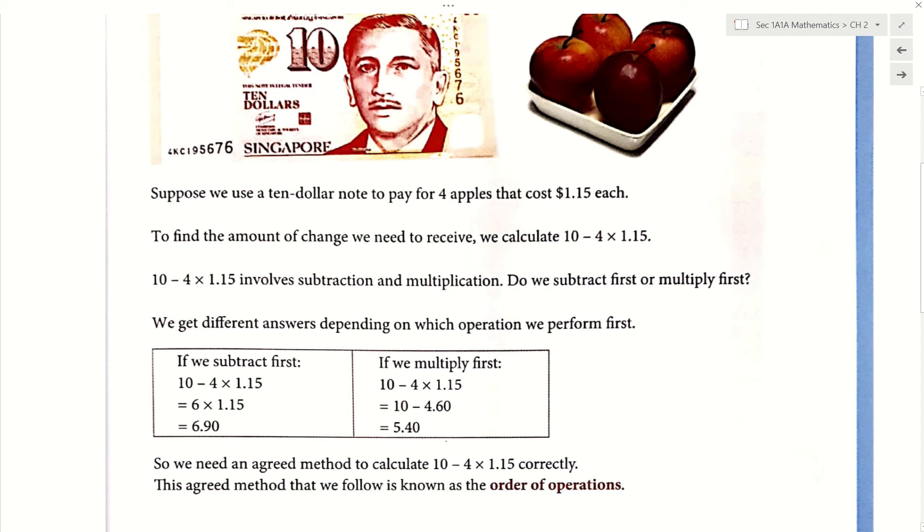Try, press your calculator, 10 minus 4, then get answer, then times 1.15. This half, you try doing the subtraction first. You do 10 minus 4, then you get an answer, then the answer times 1.15.